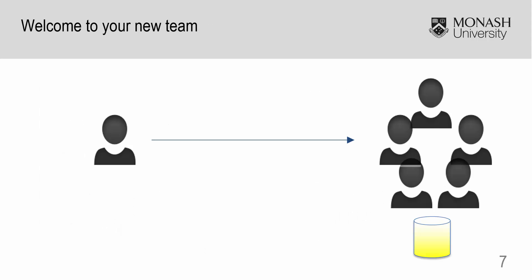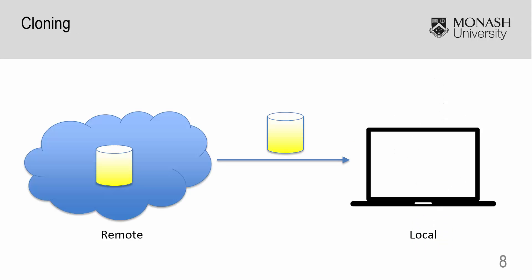So let's say you're a new engineer on the team. The team already has an existing remote repository, and it is time for you to get working on the project. The first thing you will need to do is to clone the repository. This means to create a brand new local repository using the contents of the remote repository.